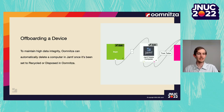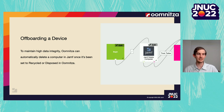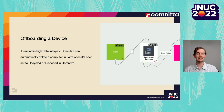Umnitsa helps streamline the offboarding or refresh of a device. When we offboard an employee's endpoints, we can leverage a solution like Retriever or Ship Engine via our API block to automatically send a shipping box to the employee to collect their device. Upon receipt by the organization, a workflow can automatically delete or remove the computer in Jamf. The goal is to maintain high data integrity — identifying devices that haven't checked in for months or even half a year — so we can remove them and maintain a clean dataset free of stale or inactive records.